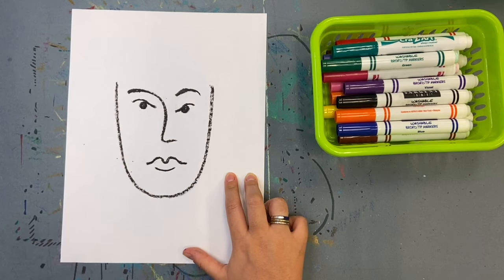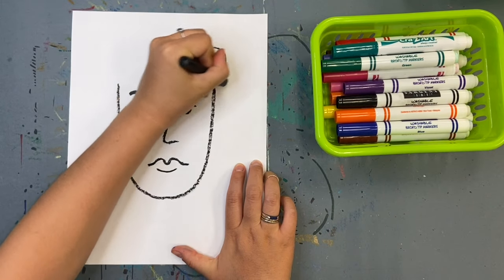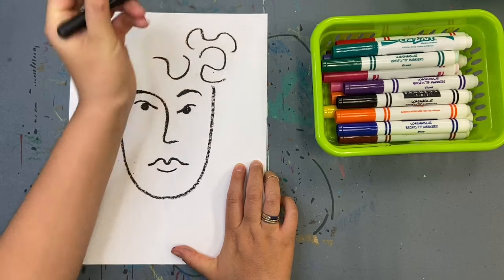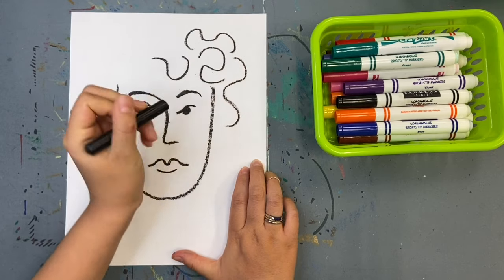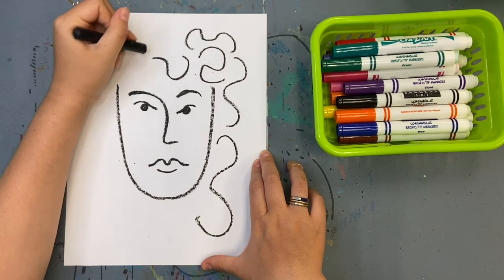Next comes hair. I'm going to show you several ways to draw hair, but you can do whatever you want. The first is long curly hair. Keep your line simple. Draw squiggly curved lines around the head.